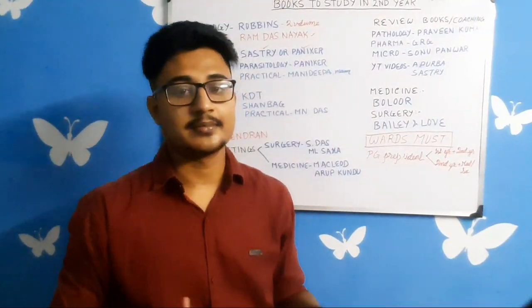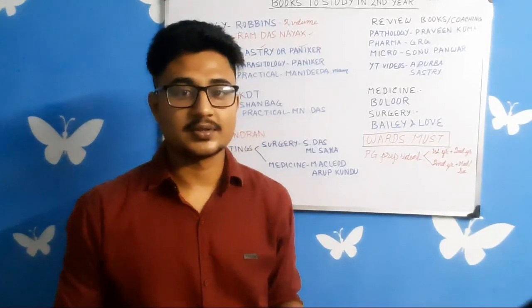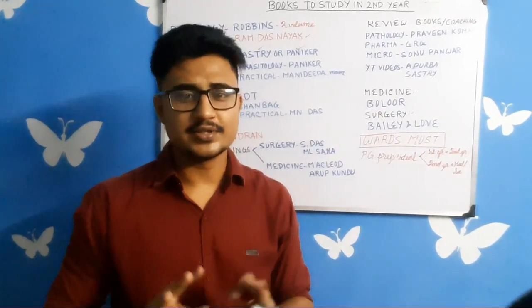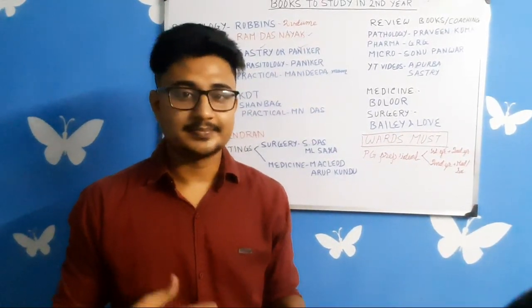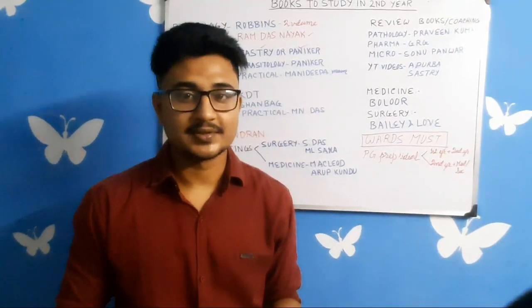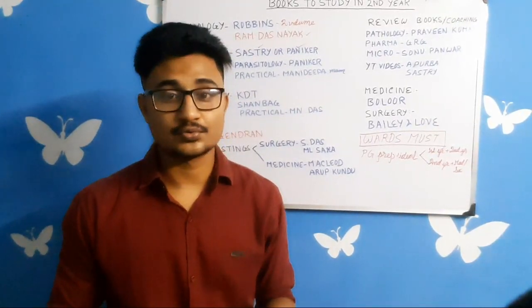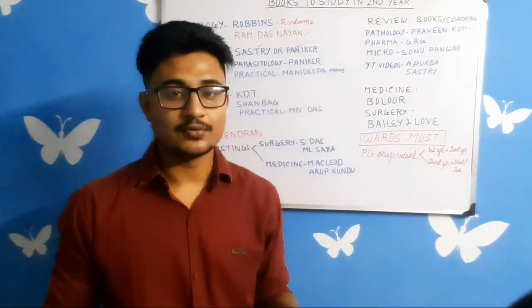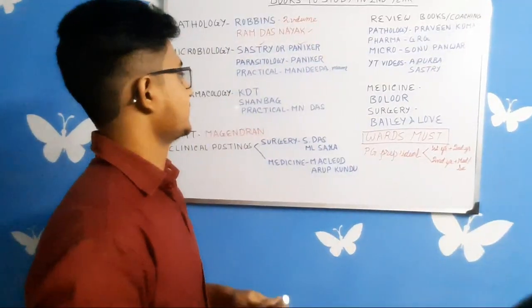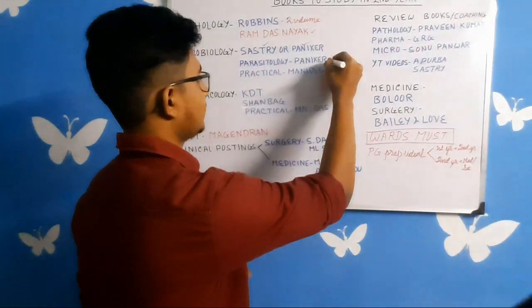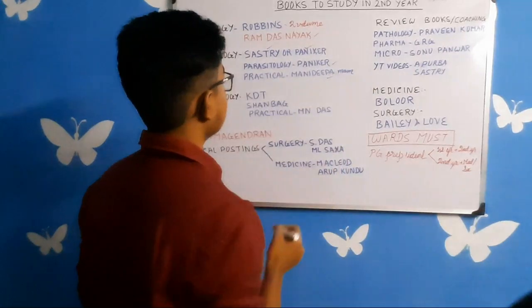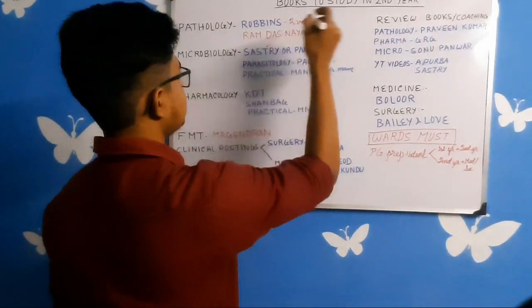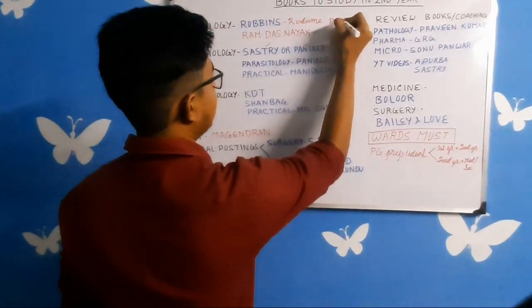Coming to microbiology, there is a bit of controversy between Sastri and Panikar. I would recommend you get them from your seniors or issue from your library to see which suits you. I prefer Sastri more than Panikar, but Panikar also suits some students. In parasitology, you should buy Panikar. For practicals, Mani's palms book is there, and in pathology practicals you can buy Peach Chakraborty.